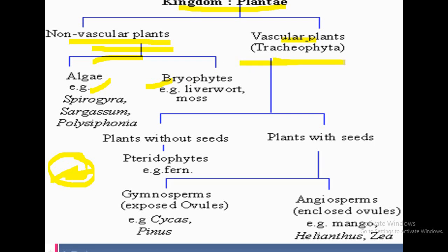Examples of non-vascular plants include Thallophyta and Bryophyta. Vascular plants are well developed and larger in size, requiring vascular bundles in the form of xylem, phloem, and cambium. Vascular plants are further classified into plants without seeds — Pteridophyta — and plants with seeds — Gymnosperms and Angiosperms.